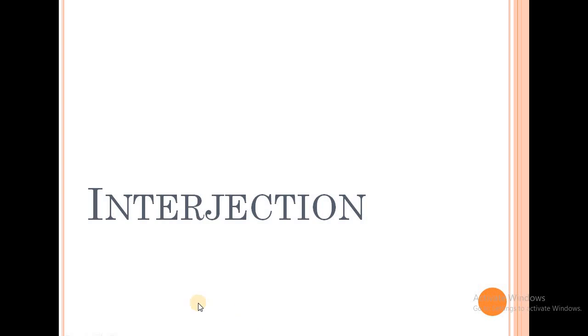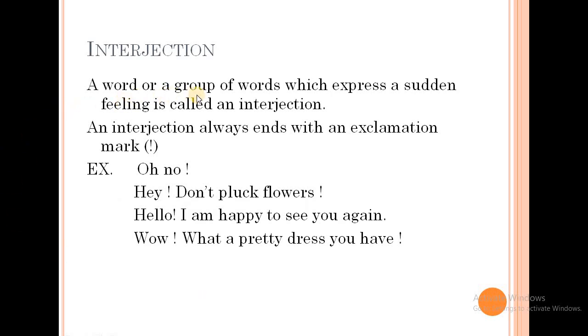Now let's see interjection. What do you mean by interjection? A word or a group of words which express a sudden feeling is called an interjection. An interjection always ends with an exclamation mark. Examples: Oh no! Hey, don't pluck flowers! Hello, I am happy to see you again. Wow, what a pretty dress you have!